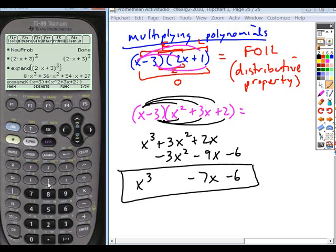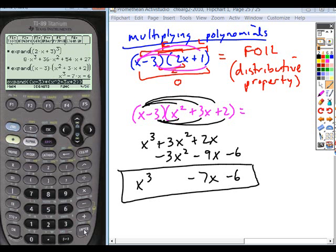Close off your whole expansion. And then, again, it confirms x cubed minus 7x minus 6 is the correct answer for that expansion.